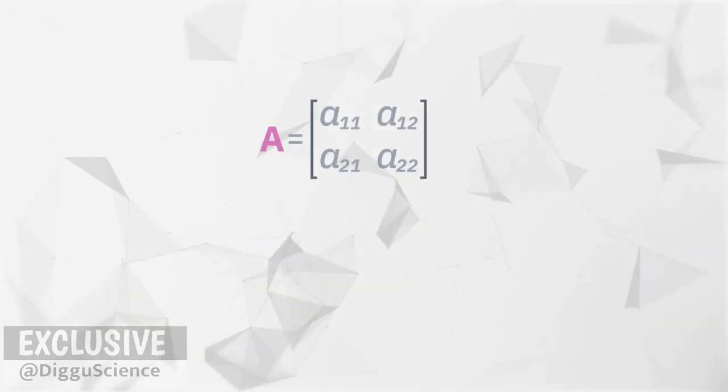Here is matrix A. The elements of the matrix are a1-1, a1-2, a2-1, and a2-2.